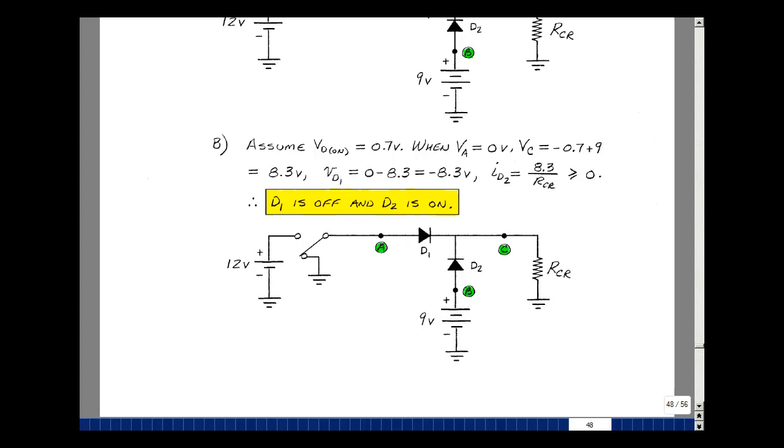Again, let's assume we have 0.7. And with this diode on, this node voltage here would be minus 0.7 plus 9, or 8.3 volts. And the voltage across this diode would be this node voltage, which is 0, minus this node voltage, which is 8.3. So it'd be minus 8.3.